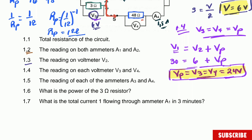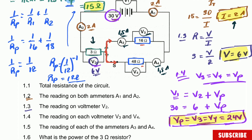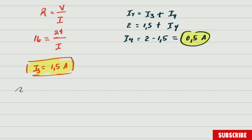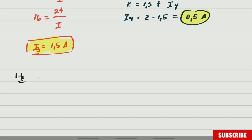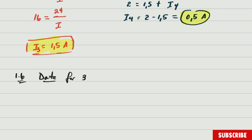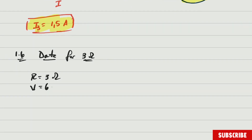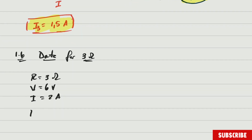Question 1.6: what is the power of the 3 ohm resistor? For that resistor we have the potential difference, the current, and the resistance. We have all the data needed for any of the power formulas. Let me write the data: resistance = 3 ohms, potential difference = 6 volts, current = 2 amperes. We are looking for power.